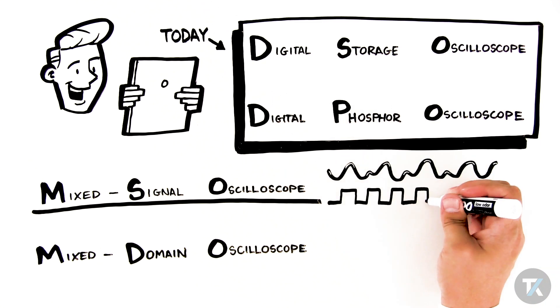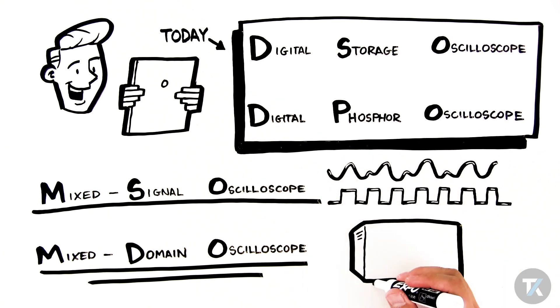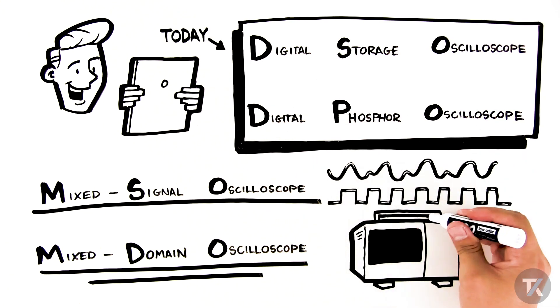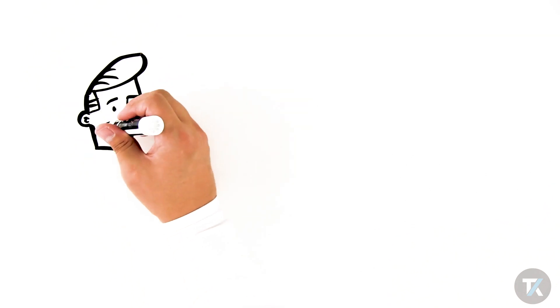Mixed signal oscilloscopes or MSOs are a type of DSO designed to display and compare both analog signals and digital signals and support input channels for both types. Mixed domain oscilloscopes or MDOs from Tektronix are available with real built-in spectrum analyzers, something unique to us.